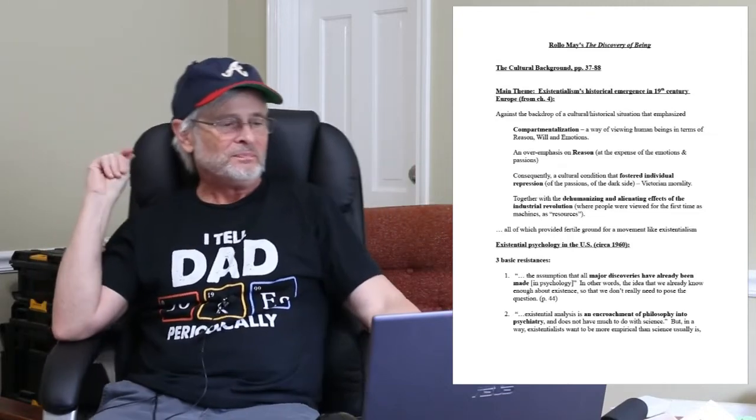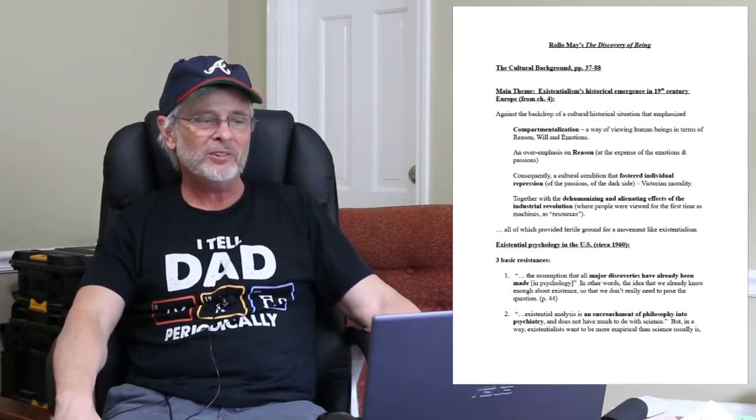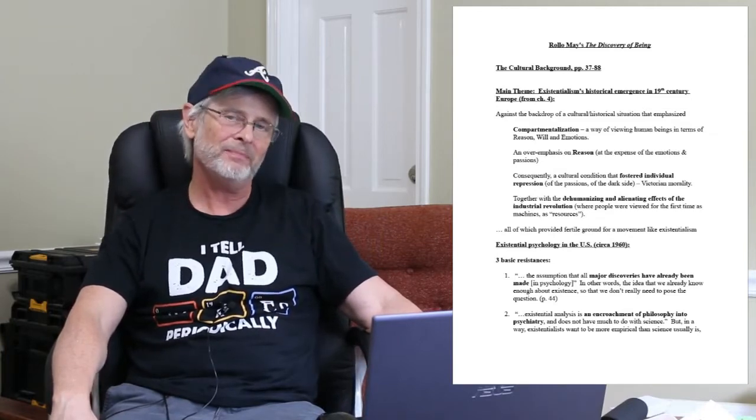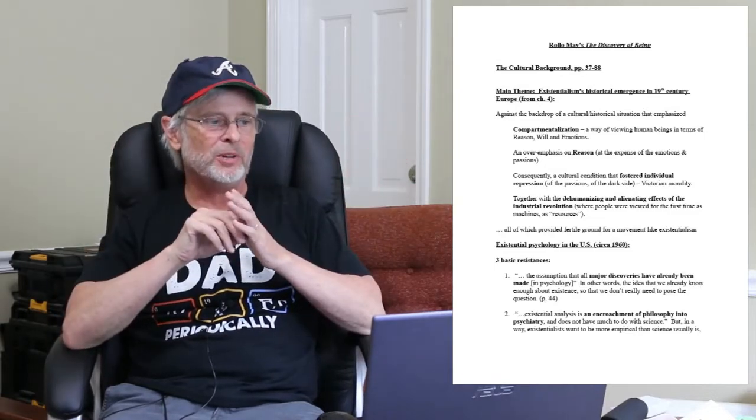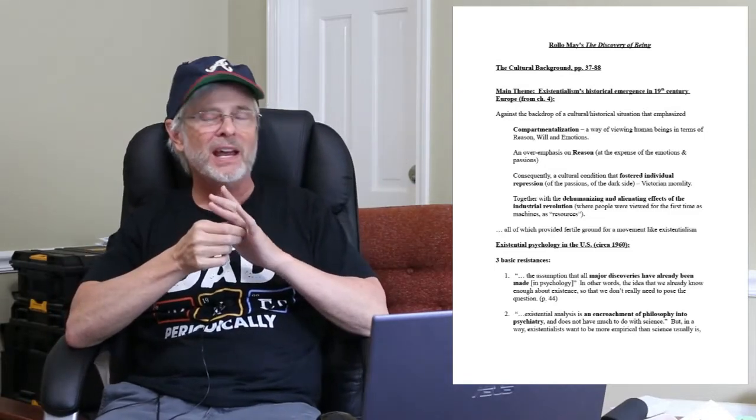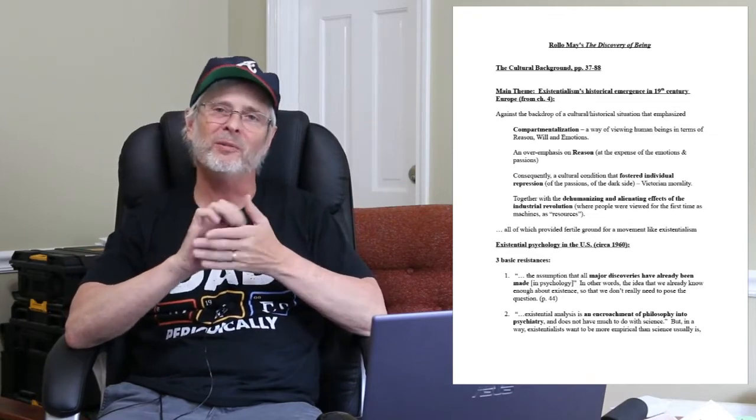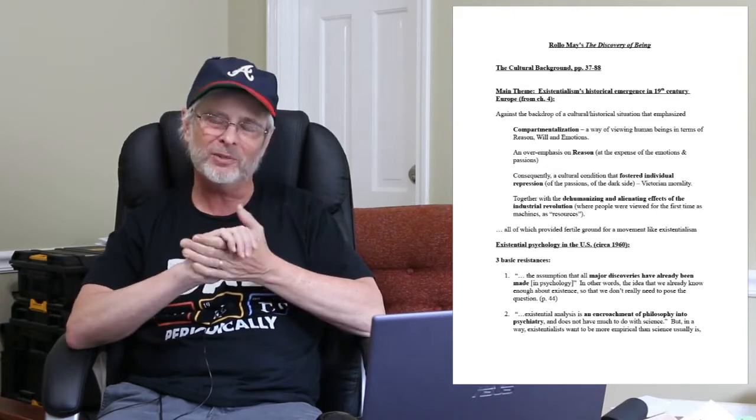All right, so main theme. Existentialism's historical emergence, especially in the 19th century. This is going to map onto material from chapter four in your reading assignment. And what you have to do for this part is to remember hopefully what you know about the 19th century and the history of the 19th century, especially in the West.